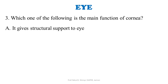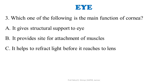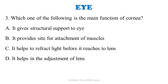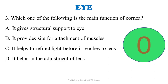Which one of the following is the main function of the cornea? A: it gives structural support to the eye. B: it provides the right side for attachment of muscles. C: it helps to reflect light before it reaches the lens. D: it helps in the adjustment of the lens. The correct answer is: it helps to reflect the light before it reaches the lens.